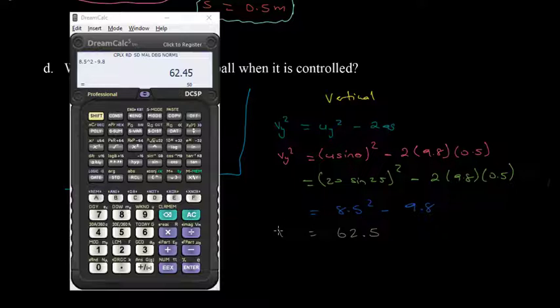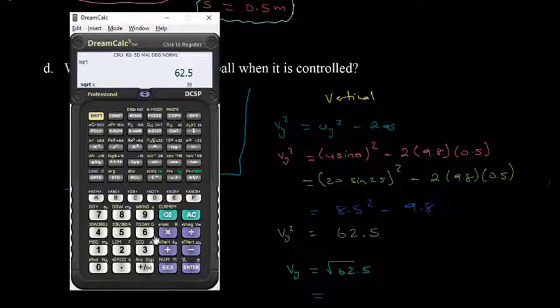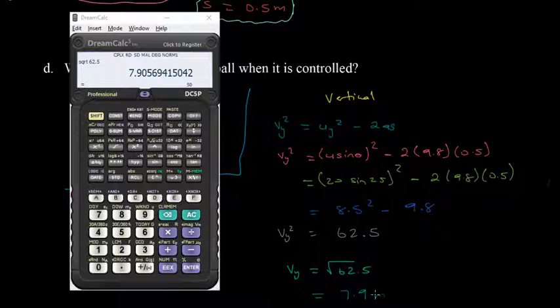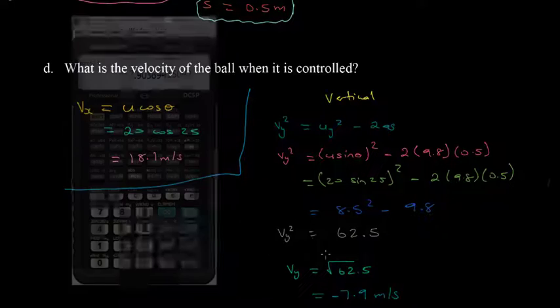So V in the vertical, square root is equal to 62.5. So therefore, Vy now must be equal to the square root of 62.5. And we see that Vy works out to be, so we take the square root of 62.5, and we get 7.9 meters per second. And again, the object is going down. So this is minus 7.9 meters per second.